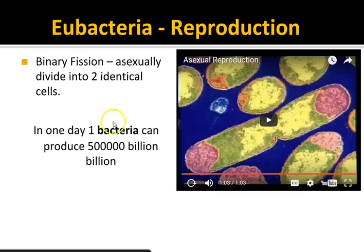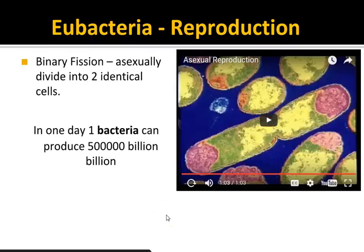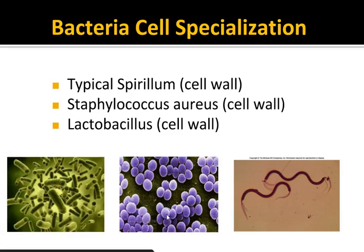There you have it — that's called binary fission. It's a mode of asexual reproduction where they're basically cloning themselves. One bacteria divides into two, two divide into four, and so on and so forth. These bacteria that live around us and in us are all over the place — they're very plentiful.